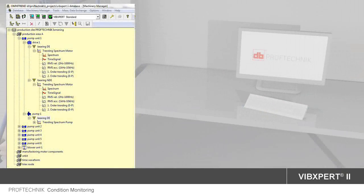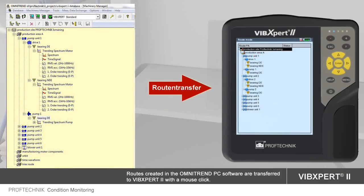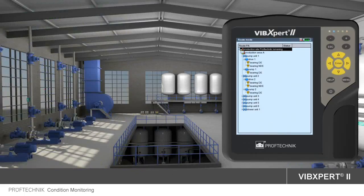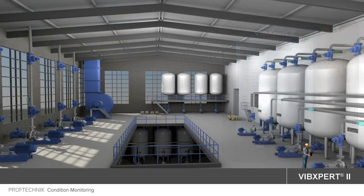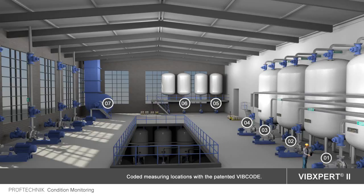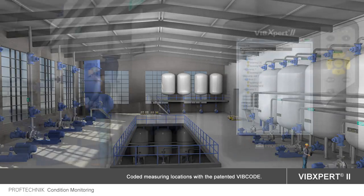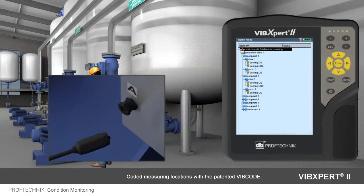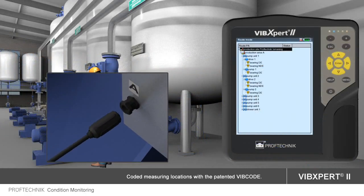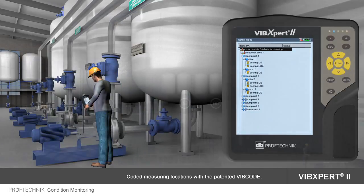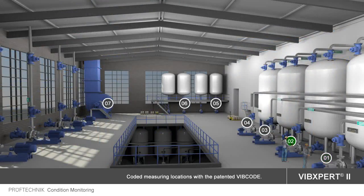A simple mouse click transfers any routes created in OmniTrend to the Wipexpert 2. For the sensor connection, Prüftechnik offers various solutions, from magnetic coupled sensors to coded measurement points with the patented WIPcode transducer. WIPcode provides a high degree of automation for data collection, guarantees reproducible results, and allows route measurements in any order.